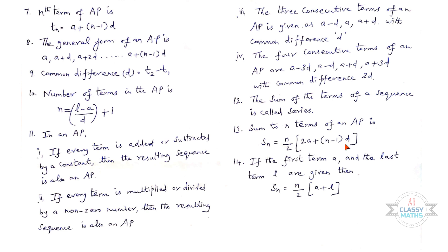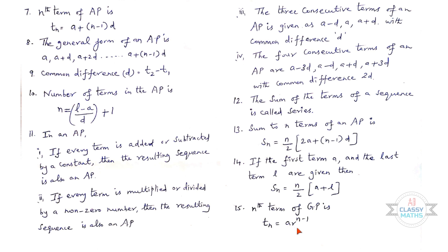Next: If the first term a and the last term l are given, then Sn = (n/2)(a + l). Fifteenth formula: The nth term of a GP is tn = ar^(n−1), where a is the first term, r is the common ratio, and n is the number of terms.